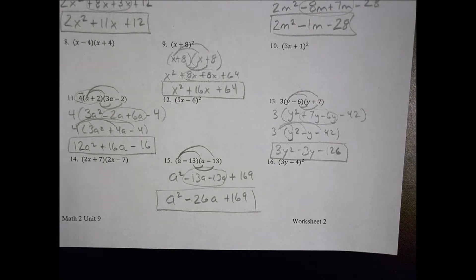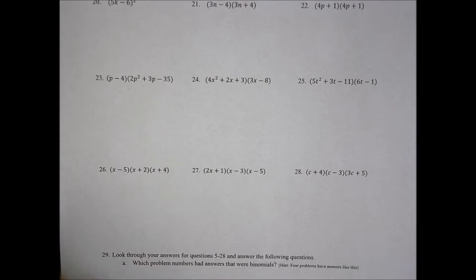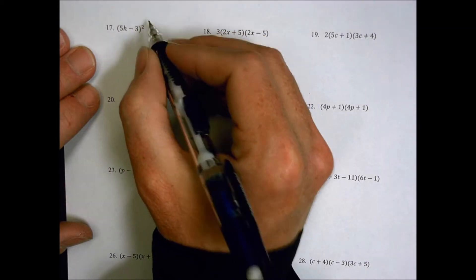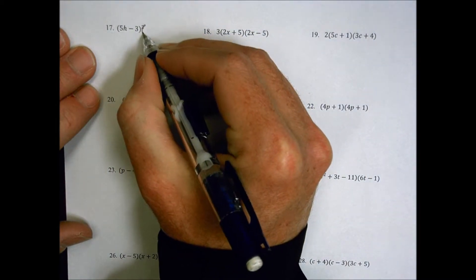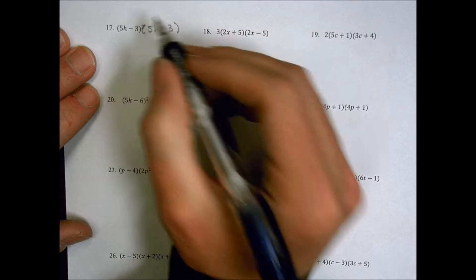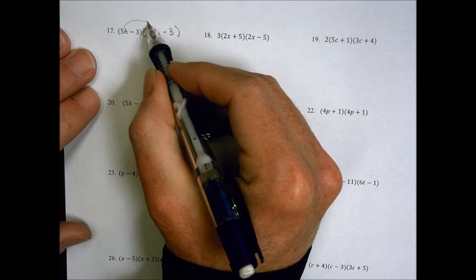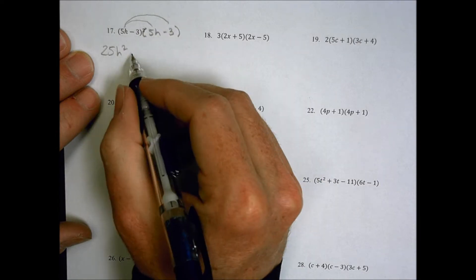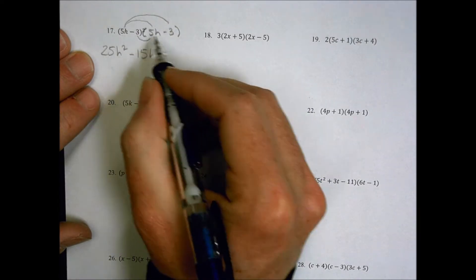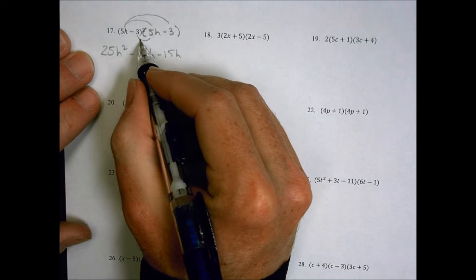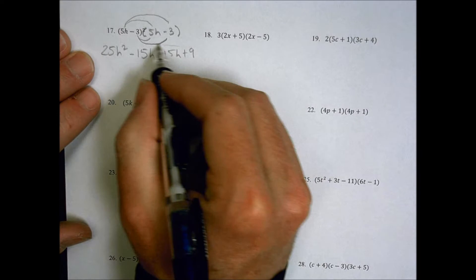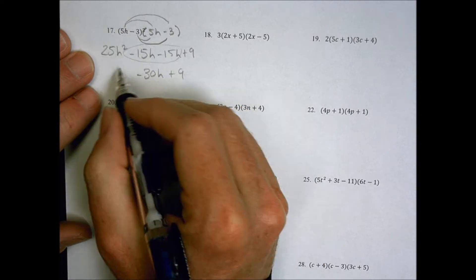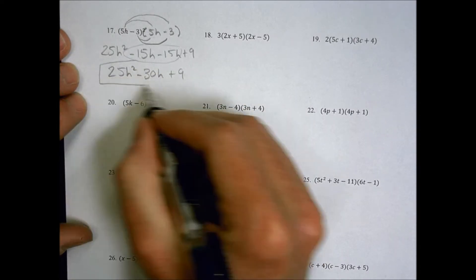Let's flip to the back side. Number 17: 5h minus 3 squared. That means 5h minus 3 times 5h minus 3. Distributing: 5h times 5h is 25h squared, 5h times negative 3 is negative 15h, negative 3 times 5h is negative 15h, and negative 3 times negative 3 is positive 9. Combining like terms, negative 15 and negative 15 give negative 30h. Final answer: 25h squared minus 30h plus 9.